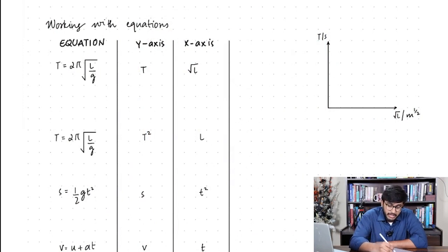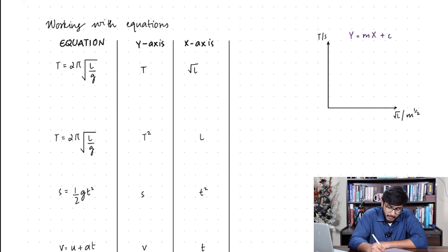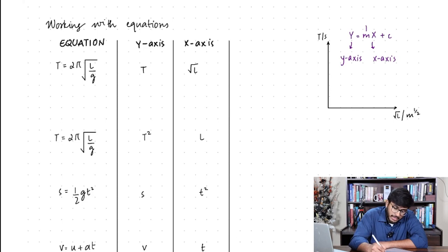We all know that the linear function is generally represented as y equals mx plus c, where y is the quantity on the y-axis, x is the quantity on the x-axis, m represents the gradient, and c represents the y-intercept.